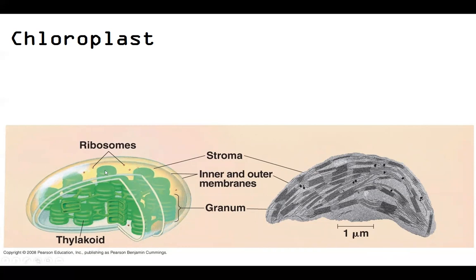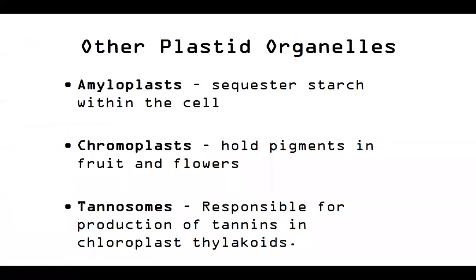Chloroplasts are the other half to our mitochondria. It's worth mentioning that there are actually a lot of other organelles derived from the same origins as chloroplasts — we call these plastid organelles. They may start out chloroplast-like and then be repurposed for these different functions.